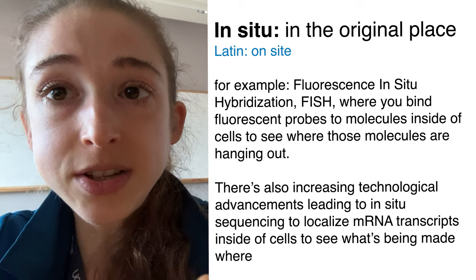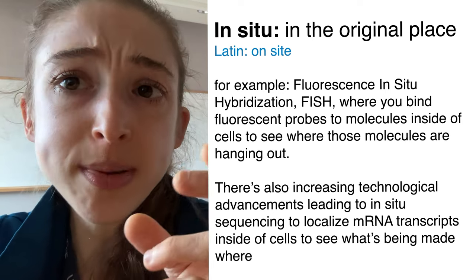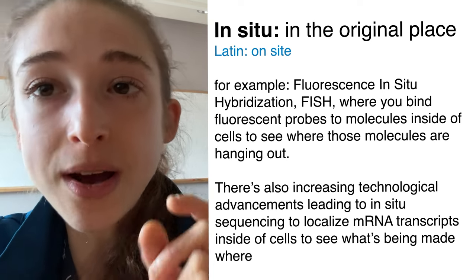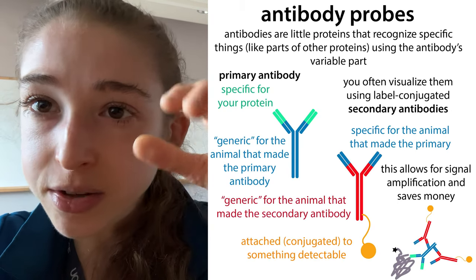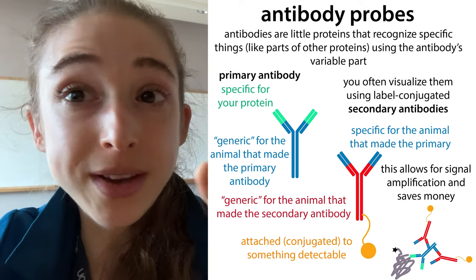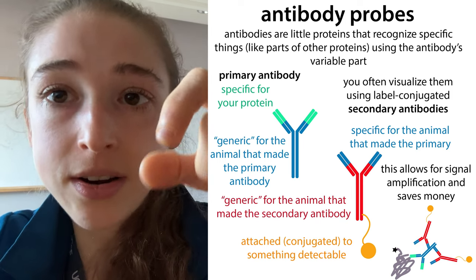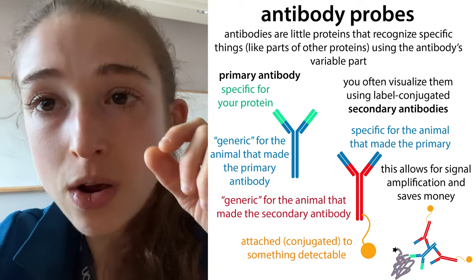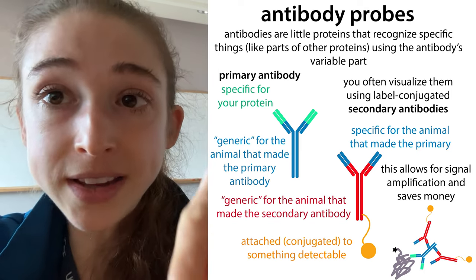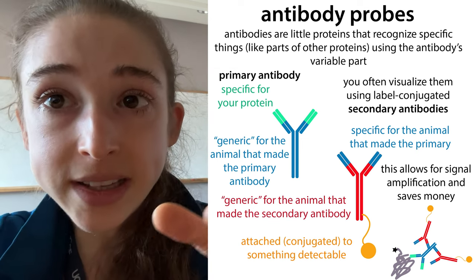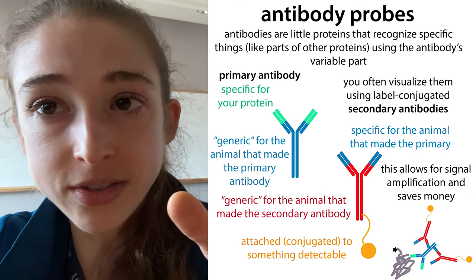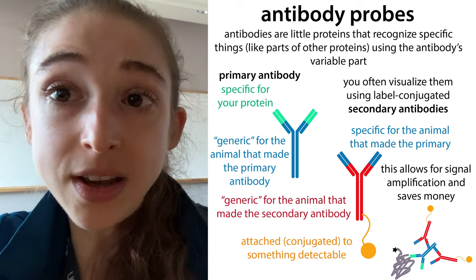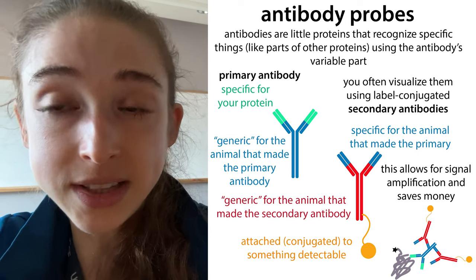Finally, there's in situ, which basically means 'in its original place.' A common example is FISH — fluorescence in situ hybridization. Basically, you take some sort of fluorescent antibody and fix the cells — chemically freezing things in place. You put molecules in there, antibodies against a certain molecule you're looking for, to see where that molecule is within the cell. You send in labeled antibodies and they bind to that molecule. Because you're doing it in situ, you're not disturbing the cells — the molecules will still be in about their original place. You visualize that antibody and can see where the molecule was located inside the cell.